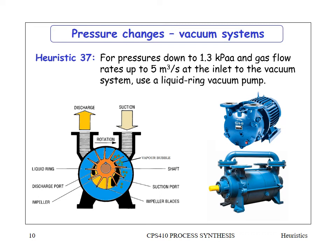When you need to get down to 1.3 kPa and gas flow rates up to five cubic meters per second at the inlet, use a liquid ring vacuum pump — like those found in laboratories. They use a liquid ring to prevent leakage. Five cubic meters per second is a significant flow, but not a large mass flow since 1.3 kPa is only about 1.3% of atmospheric pressure.